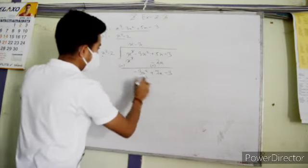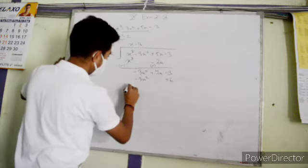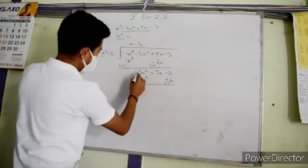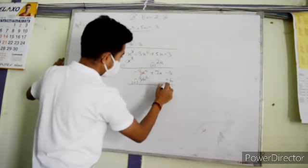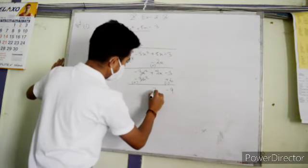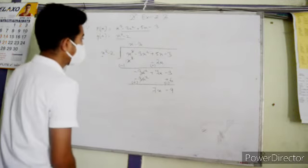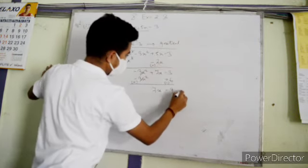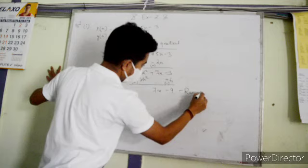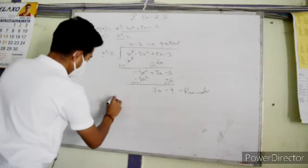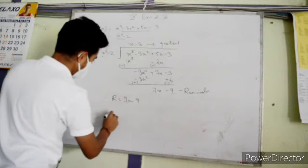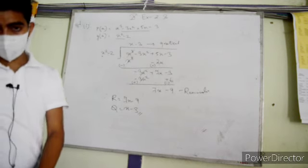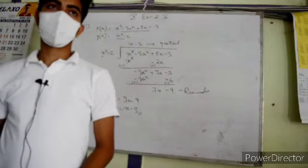After cancelling, this gives minus 9, and the remainder term is 7x. So here, this is your coefficient. Therefore, the remainder is 7x minus 9, and your quotient is x minus 3. So in this way, the rest you do by yourself.